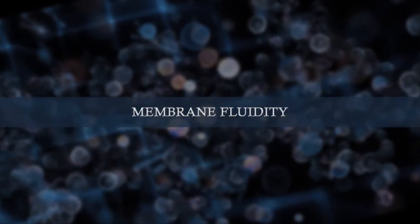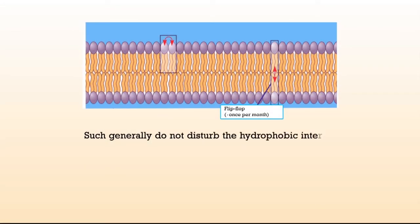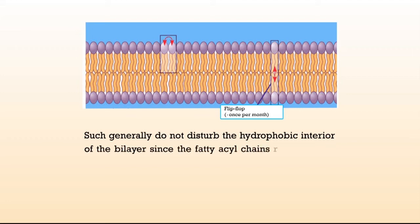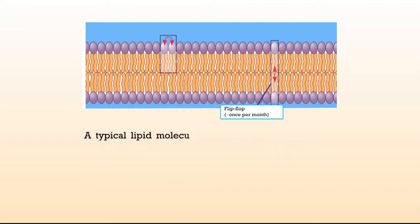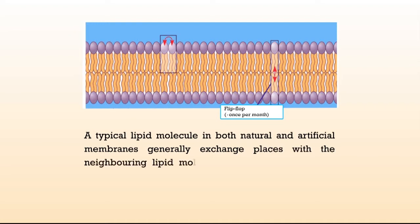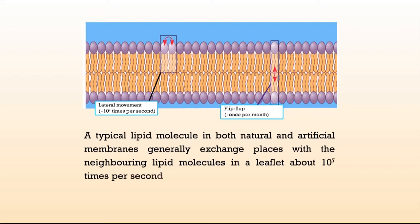First, let us see membrane fluidity. In most membranes, the phospholipid molecules can rotate freely around their long axis in the two-dimensional plane of a bilayer and also can diffuse laterally within each leaflet of the bilayer. Such rotations generally do not disturb the hydrophobic interior of the bilayer since the fatty acyl chains remain in the hydrophobic interior during lateral or rotational movements. A typical lipid molecule generally exchanges places with neighboring lipid molecules in a leaflet about 10⁷ times per second, and diffuses several micrometers per second at 37 degrees Celsius.